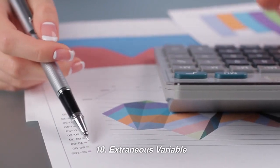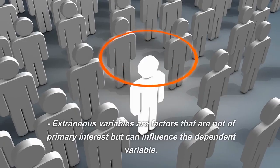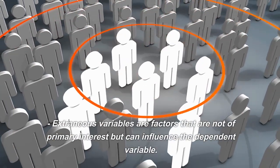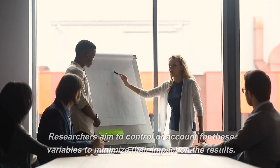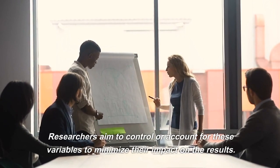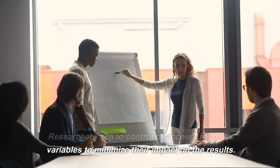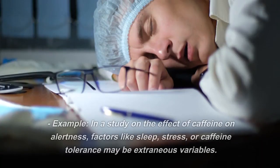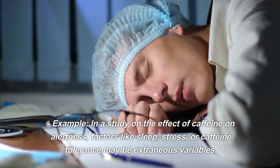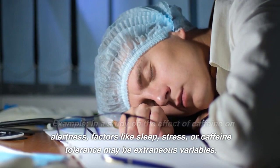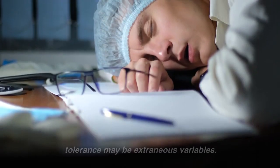Extraneous variable. Extraneous variables are factors that are not of primary interest but can influence the dependent variable. Researchers aim to control or account for these variables to minimize their impact on the results. Example: In a study on the effect of caffeine on alertness, factors like sleep, stress, or caffeine tolerance may be extraneous variables.